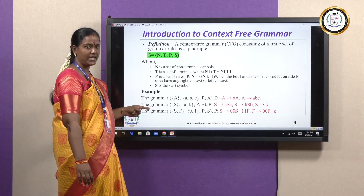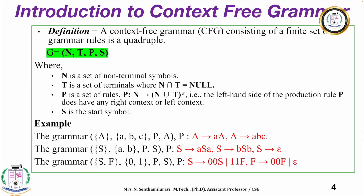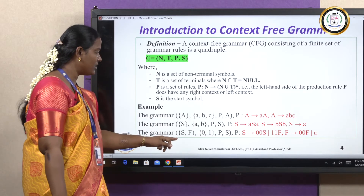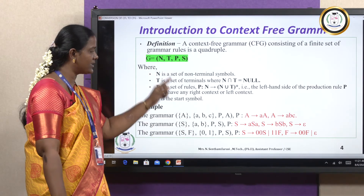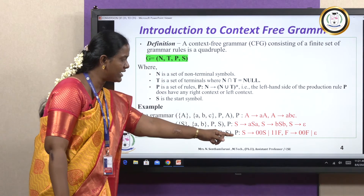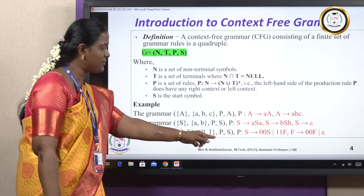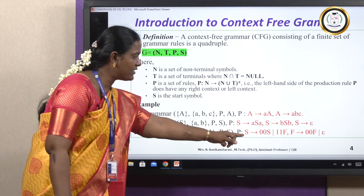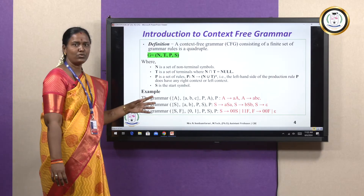For the second example, S is the non-terminal, T is the terminal with A and B, and the production rules are: S implies ASA, S implies BSB, and S implies epsilon. For the third example, S is the non-terminal, 0 and 1 are terminals, and the production rules are: S implies 0S1 and S implies 0F1, and F implies 00F. Here S is the starting symbol.